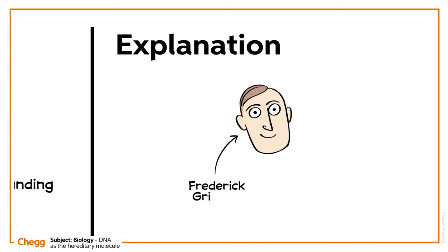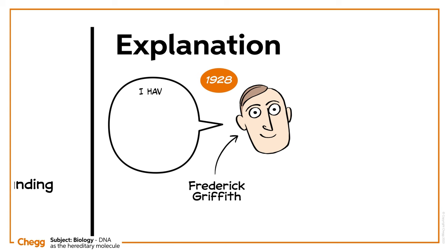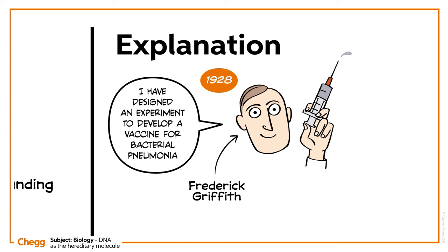Meet Frederick Griffith, a British bacteriologist. In 1928, Griffith designed an experiment to develop a vaccine for bacterial pneumonia. Instead, he made an alternative but nevertheless valuable discovery.